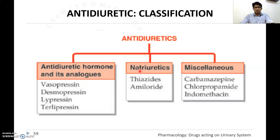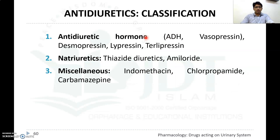Natriuretics are agents that increase sodium excretion while reducing water excretion. Examples include thiazides, chlorthalidone-like drugs, and amiloride. Miscellaneous drugs include carbamazepine, an anticonvulsant, chlorpropamide, and indomethacin, which is an NSAID.